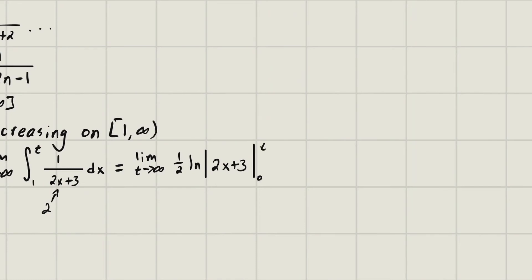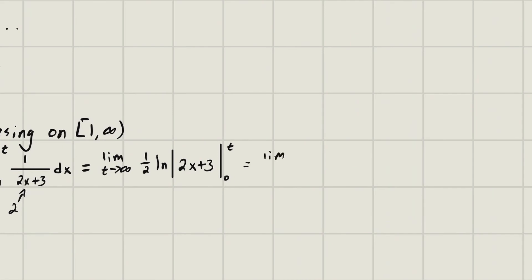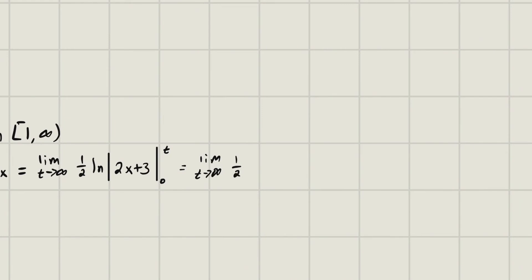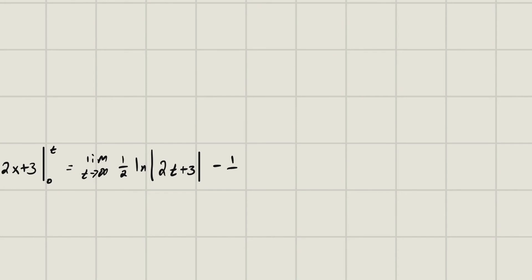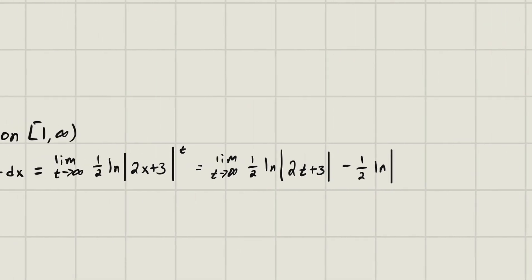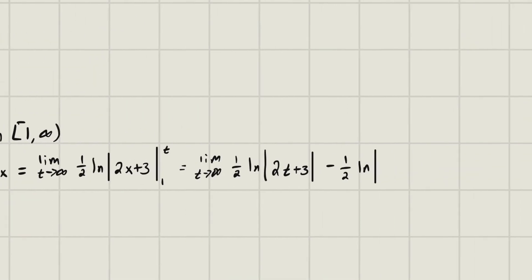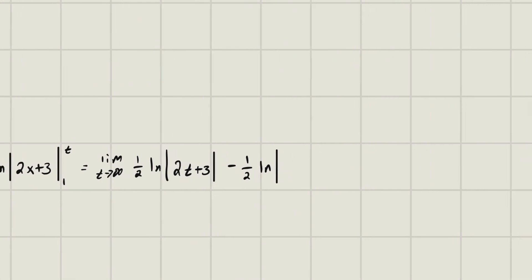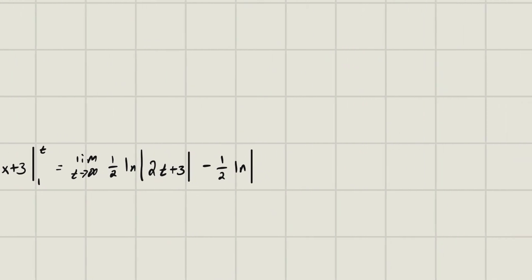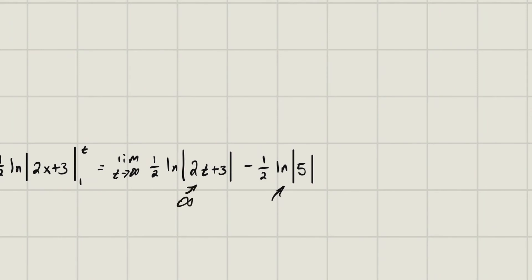Evaluating: the limit as t→∞ of [1/2 · ln(2t+3) − 1/2 · ln(2(1)+3)]. That second term is 1/2 · ln(5), which is just some finite number. But as t→∞, ln(2t+3) goes to infinity. So infinity minus a finite number is still infinity — therefore divergent by the integral test.